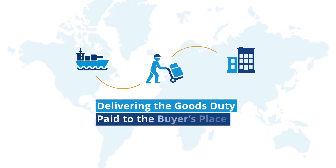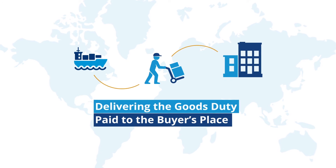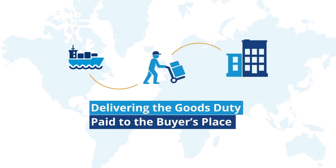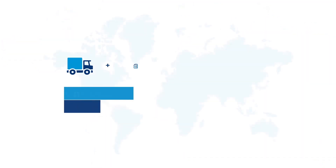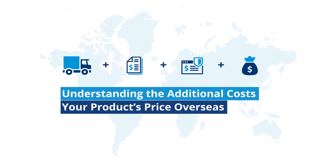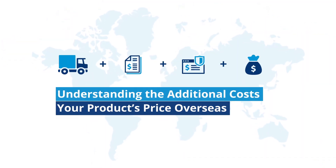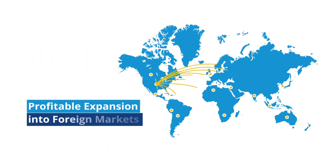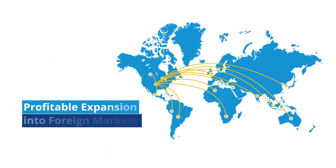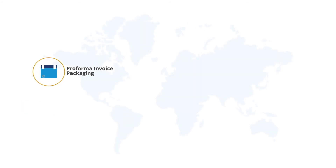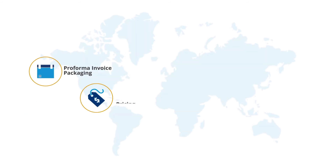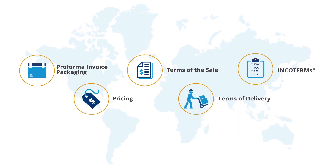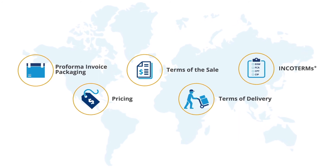Or if you are going to take responsibility for delivering the goods duty paid to the buyer's place of business, there is an Incoterm for that too. Understanding the additional costs when setting your product's price overseas is critical to a profitable expansion into foreign markets. A pro forma invoice describes the product, packaging, pricing, and terms of the sale, including terms of delivery and the responsible party, called Incoterms.